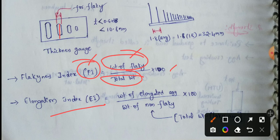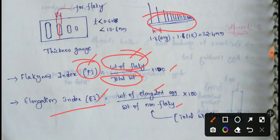After the flakiness test, we record the remaining total weight (non-flaky). The elongation index equals the total weight of elongated aggregates divided by the weight of non-flaky aggregates, multiplied by 100. The flakiness index equals the weight of flaky particles divided by the total weight, multiplied by 100.